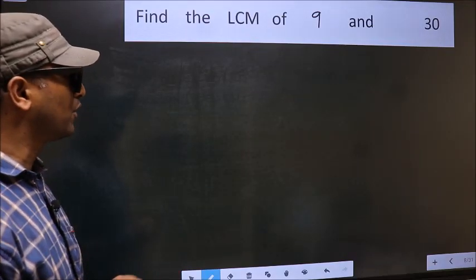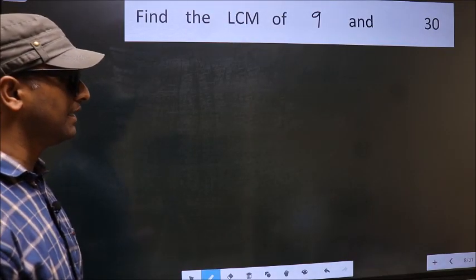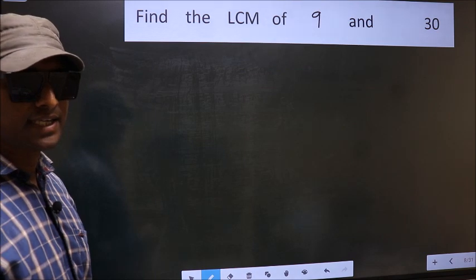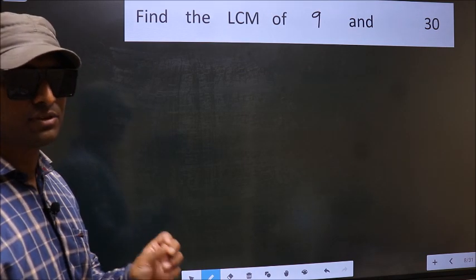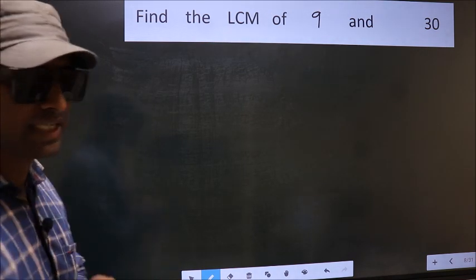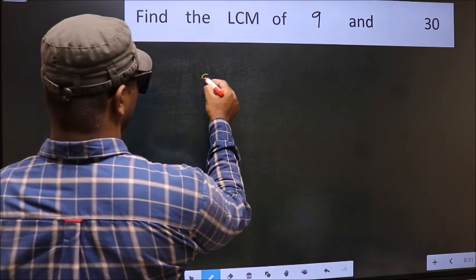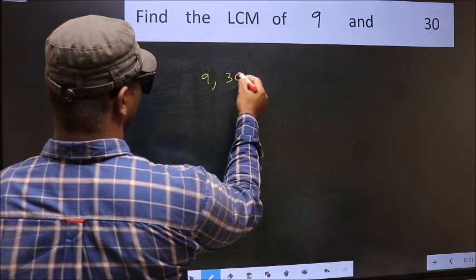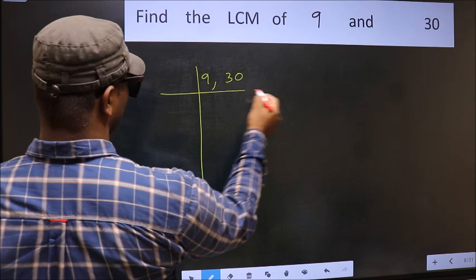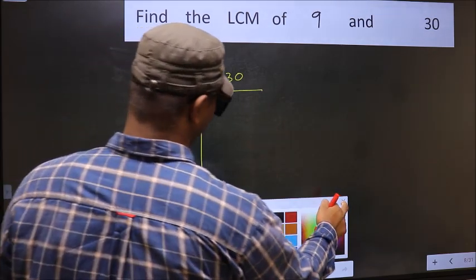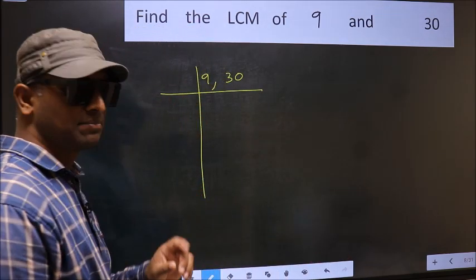Find the LCM of 9 and 30. To find the LCM, we should frame it in this way: 9, 30. This is your step 1.